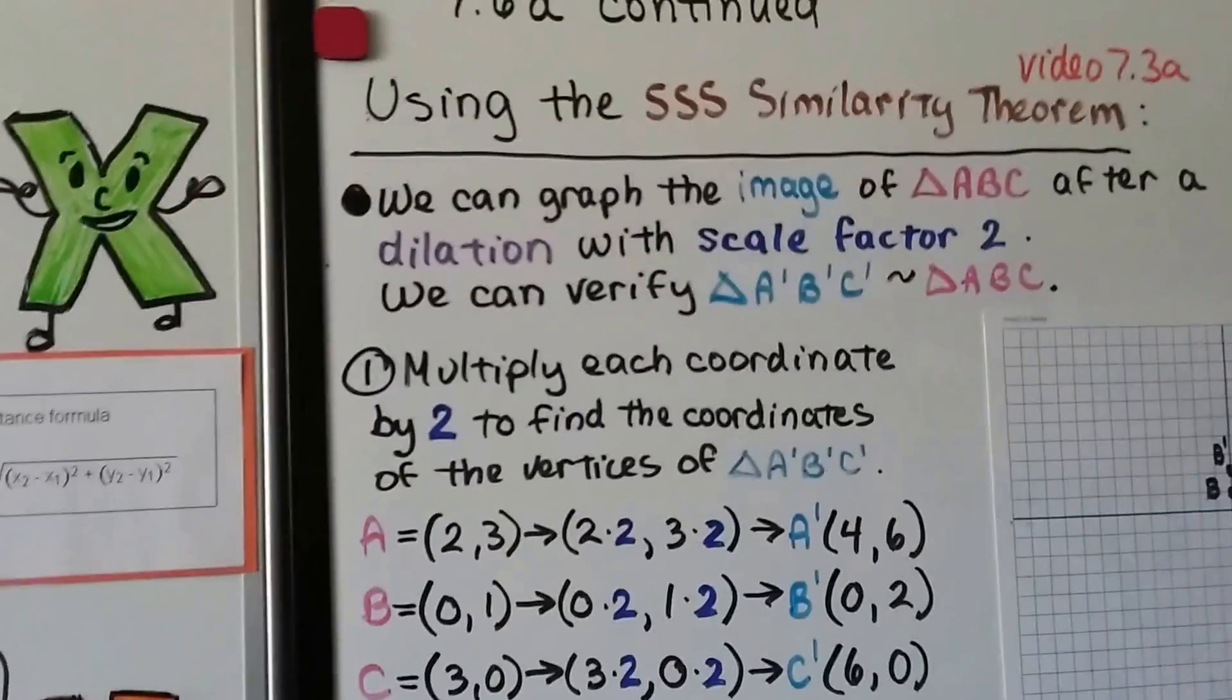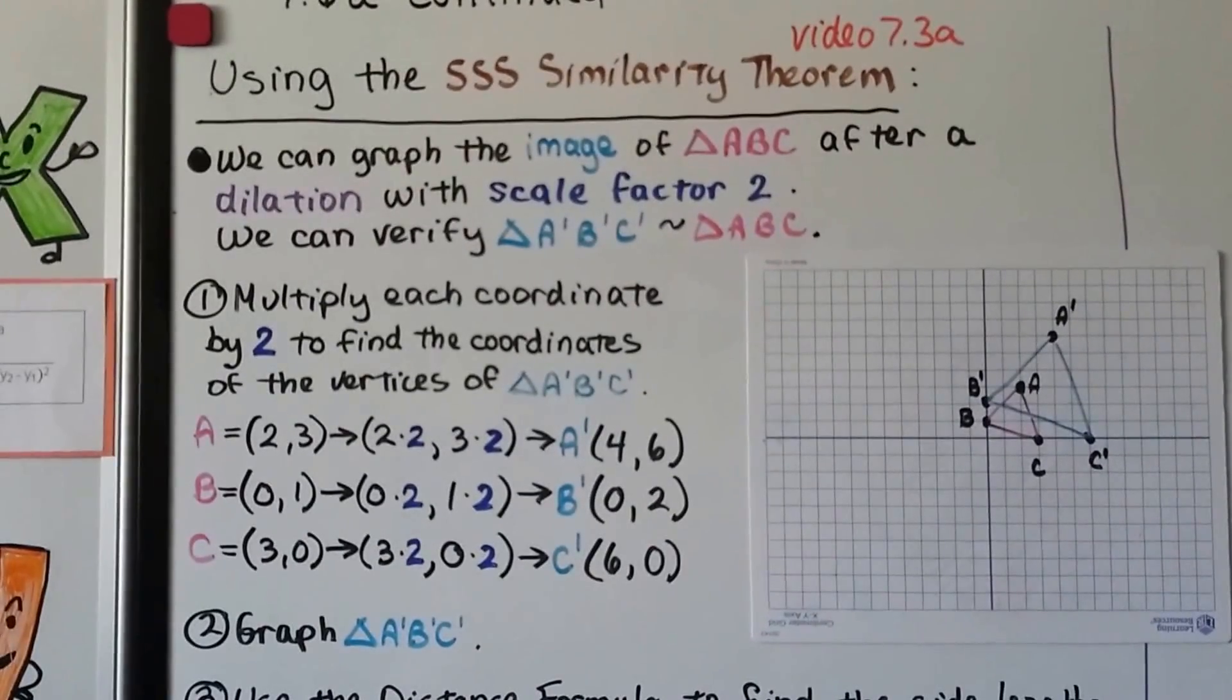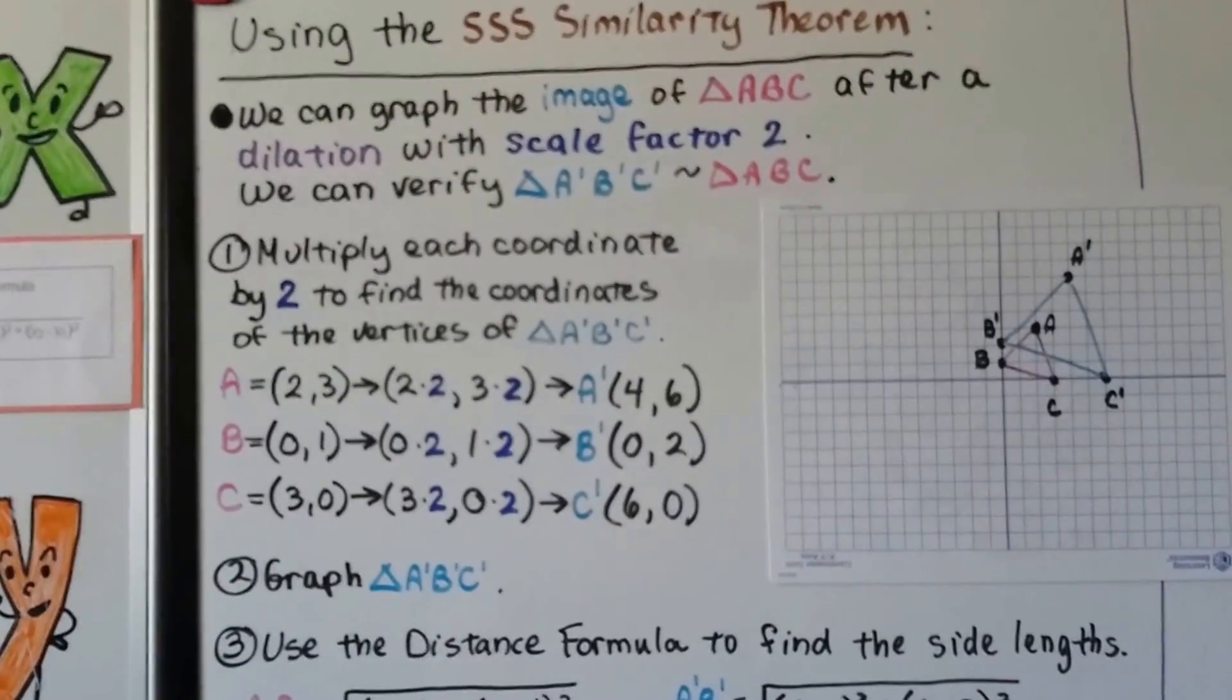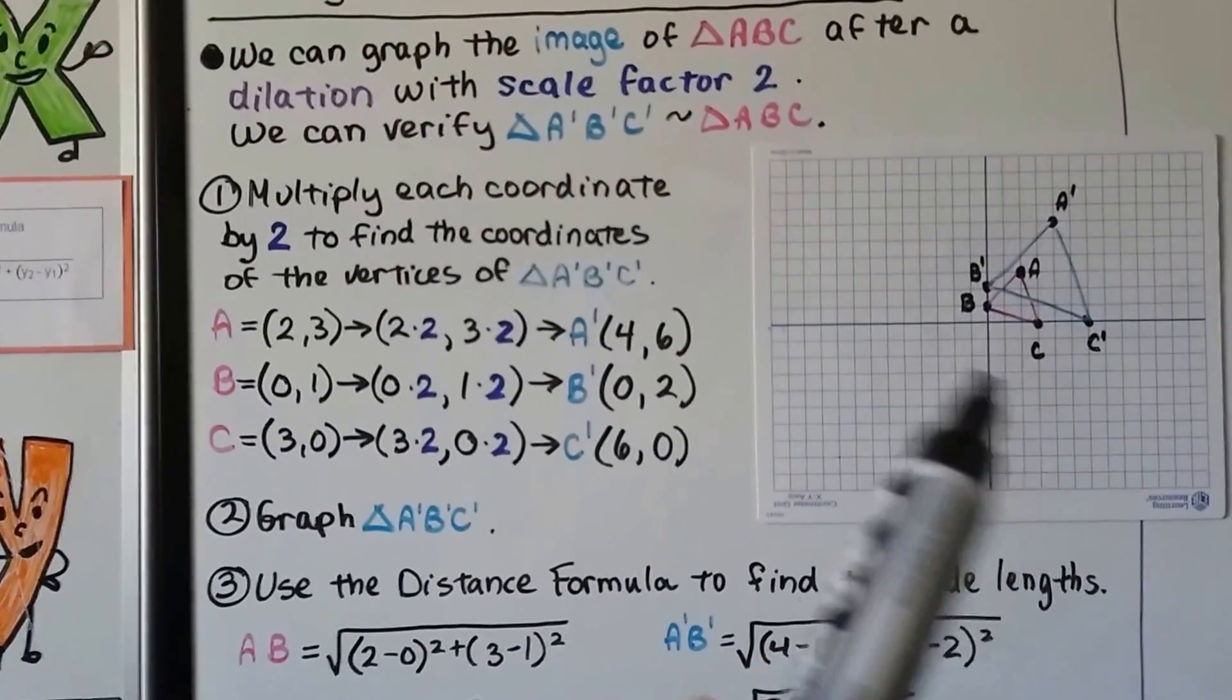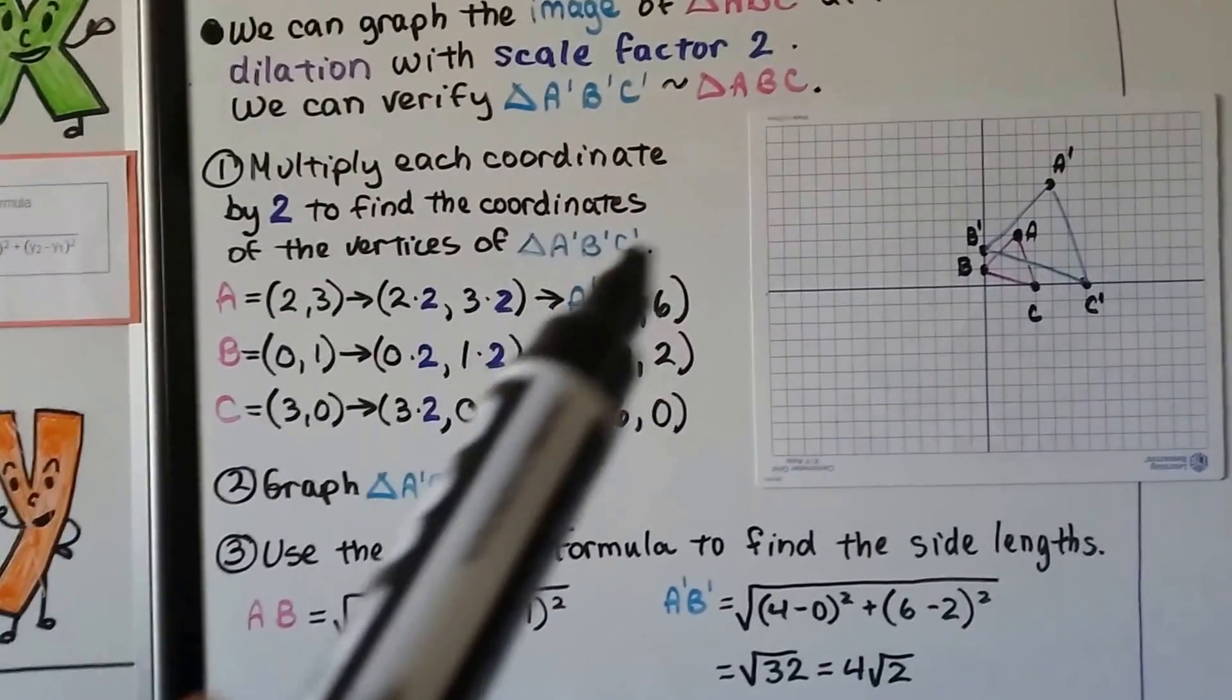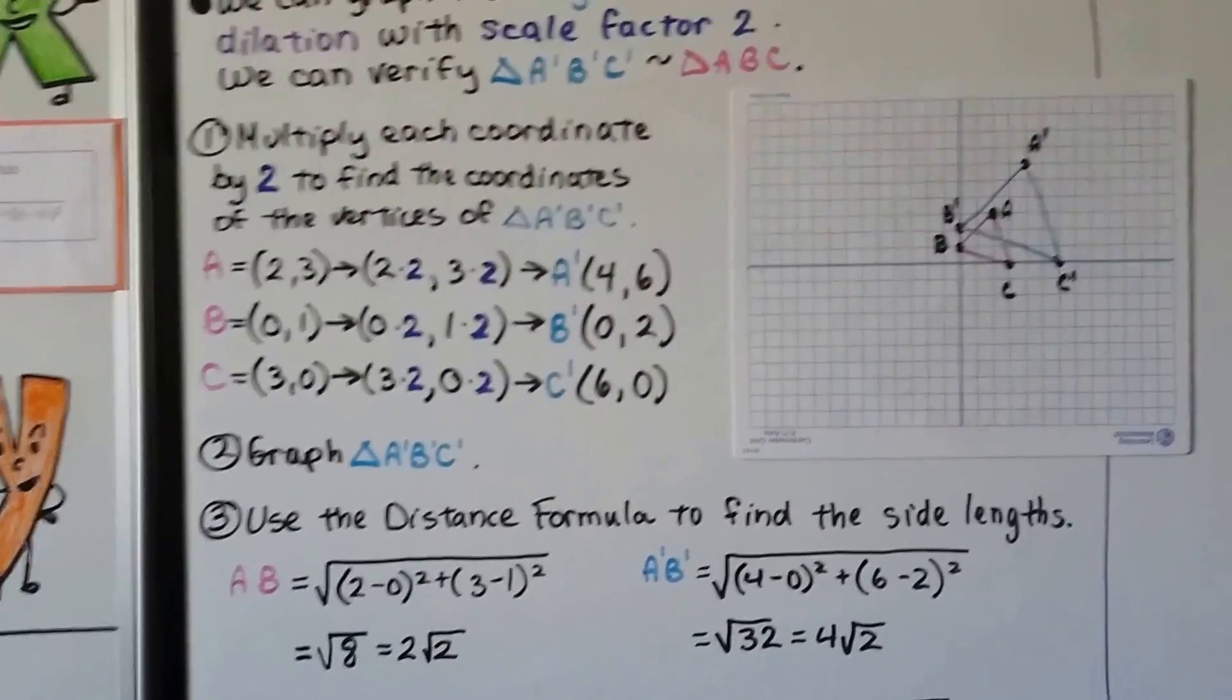We're going to use SSS similarity theorem. We can graph the image of triangle ABC after a dilation with scale factor 2. Then we can verify that triangle A'B'C' is similar to triangle ABC. The first thing we do is multiply each coordinate by 2, and we get A', B', C'. Then we graph A'B'C' from those ordered pairs.